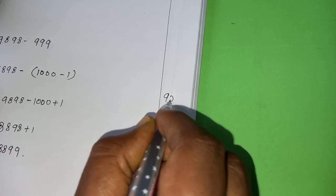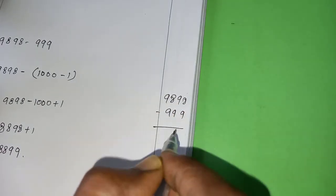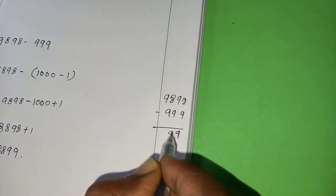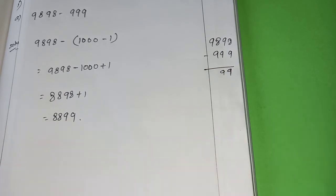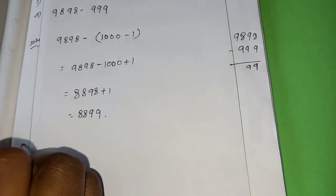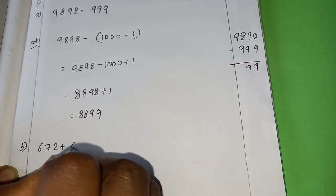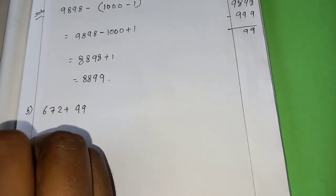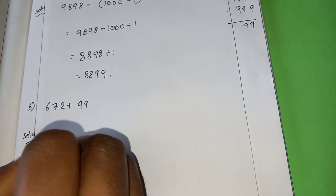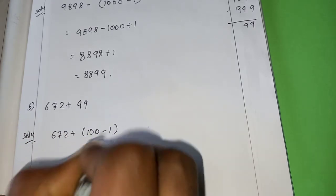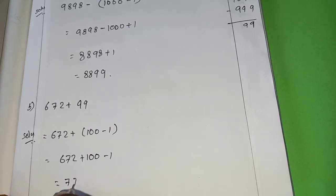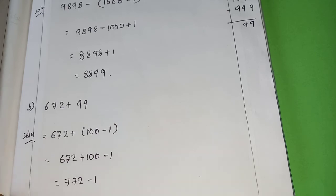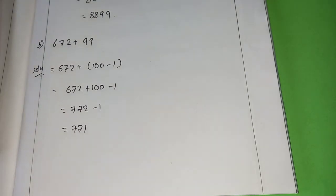Instead of doing 9,898 minus triple 9, 18 minus 9, 9, 8 minus 9, 18 minus 9, taking borrow, everything. It is a huge problem or not. So instead of doing like that, it is better to do like this. Now, B, 672 plus 99. 672 plus 100 minus 1. 672 plus 100 is 772 minus 1. So the answer is 771. In the same way, you have to do remaining.